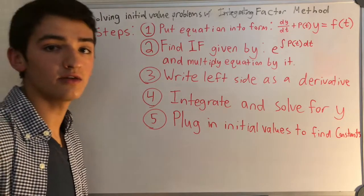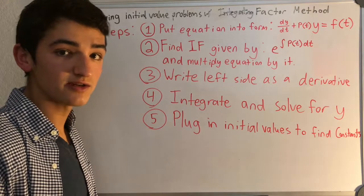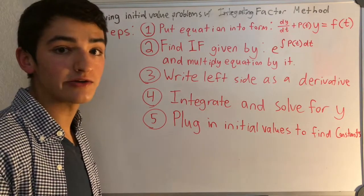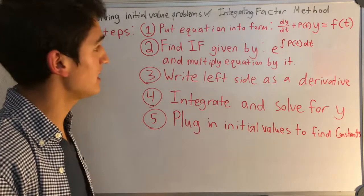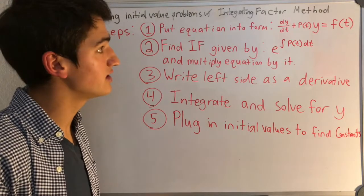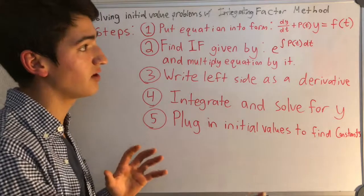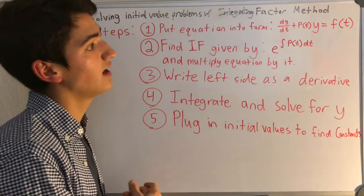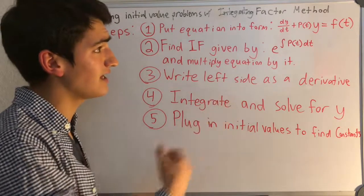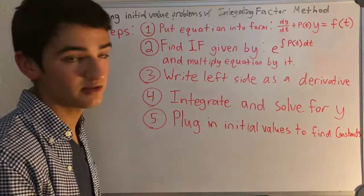Today we're going to be working on solving initial value problems using the integrating factor, or sometimes called the IF, method. It's simplest if we break it up into a couple of steps. First, you're going to put the equation into the form of dy/dt plus some function of t times y equals another function of t. If it can't get into this form, you probably should not be using the integrating factor method.